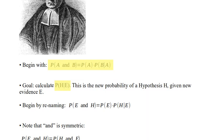Given the evidence, what's the probability that the hypothesis is correct? So we're going to rename A to E and rename B to H. In an algebraic setting, we're just renaming. That first equation — the probability of A and B equals the probability of A times the probability of B given A — becomes the probability of E and H equals the probability of E times the probability of H given E.